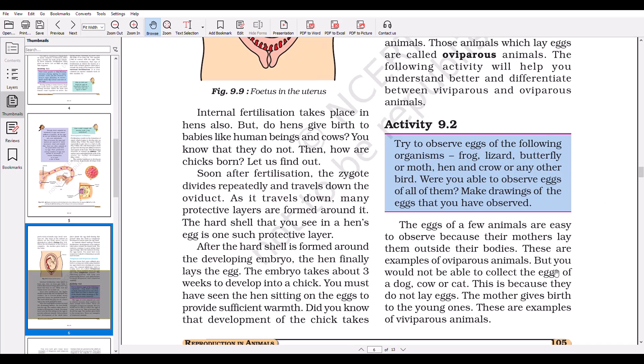Now we have Activity 9.2. Try to observe eggs of the following organisms: frog, lizard, butterfly or moth, hen, and crow or any other bird. Were you able to observe eggs of all of them? Make drawings of the eggs that you have observed. Hope you enjoy doing this activity, but collect the eggs carefully, and if possible, don't try to pick them up because it may render them damaged and they may not grow into new individuals. So you may draw them but try not to pick them up.